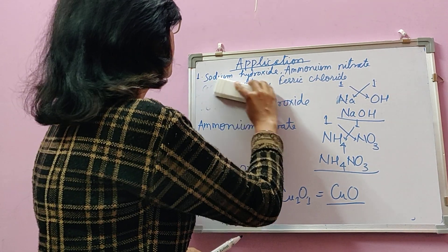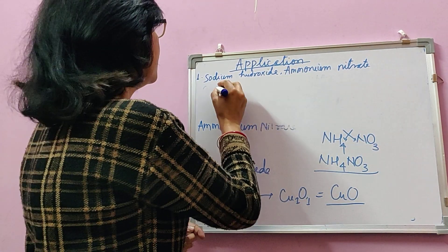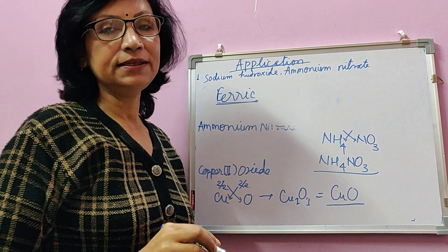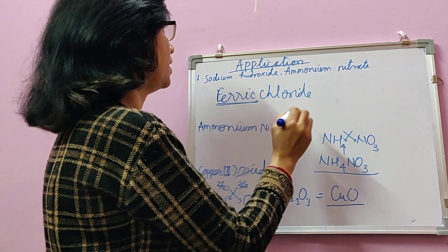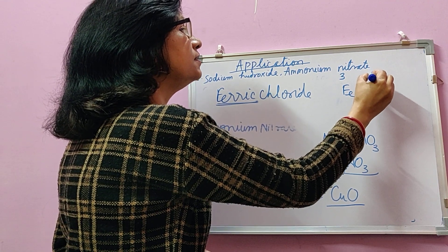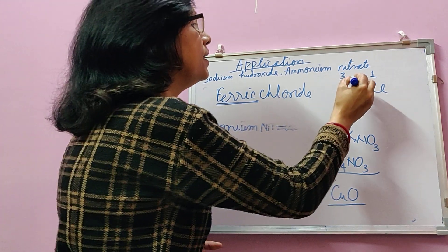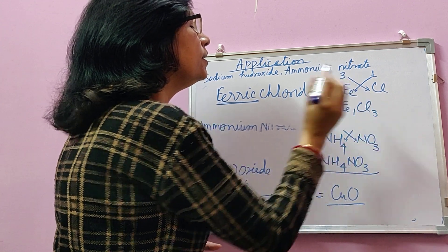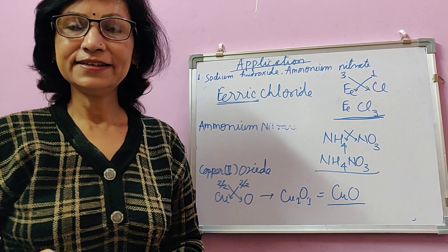The last one is ferric chloride. 'Ferric' tells us it is iron with valency 3, so ferric chloride means iron(III) chloride. Iron's valency is 3 and chloride's valency is 1. Since 1 and 3 have no common factor, they cannot be simplified. Applying the criss-cross method: Fe gets subscript 1 (not written) and Cl gets subscript 3. The final formula is FeCl₃.